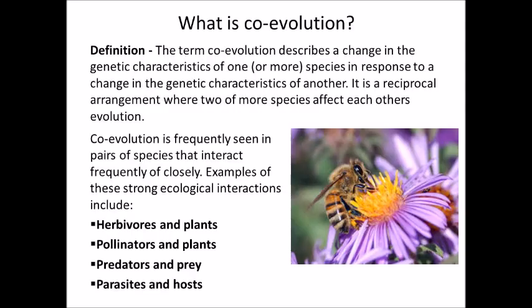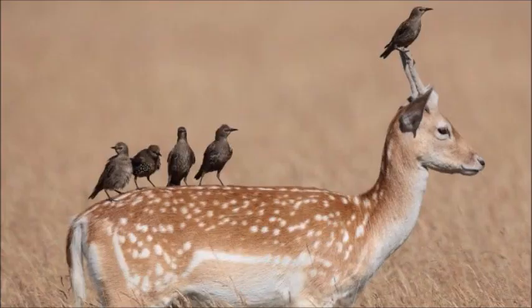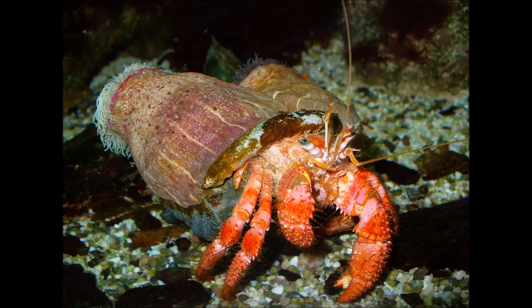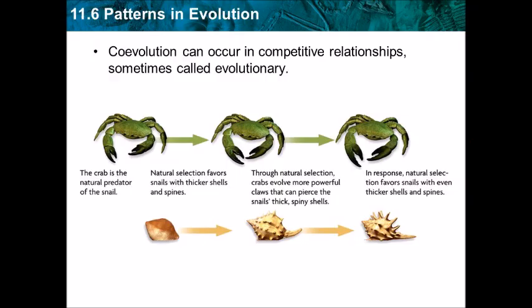Co-evolution is defined by Berkeley's Understanding Evolution as the way populations of organisms evolve together over generations. Co-evolution isn't the same as symbiosis. Symbiosis is just organisms living together, but co-evolution is how the populations of organisms evolve over generations together.